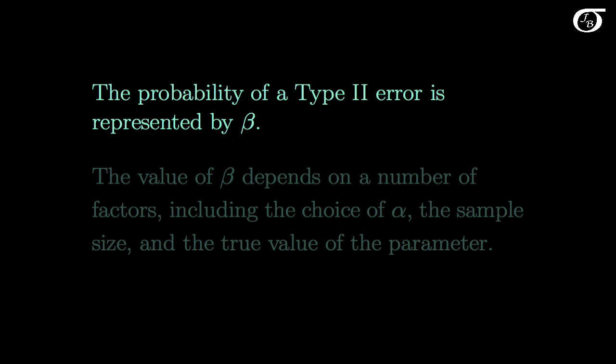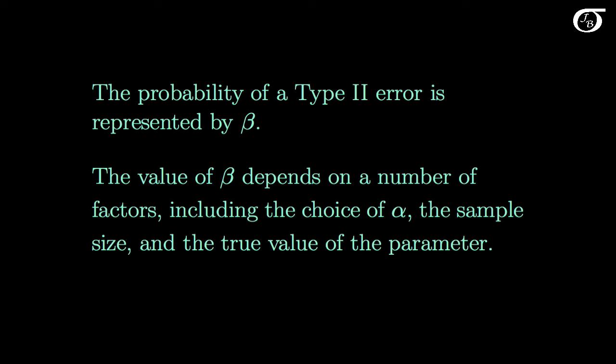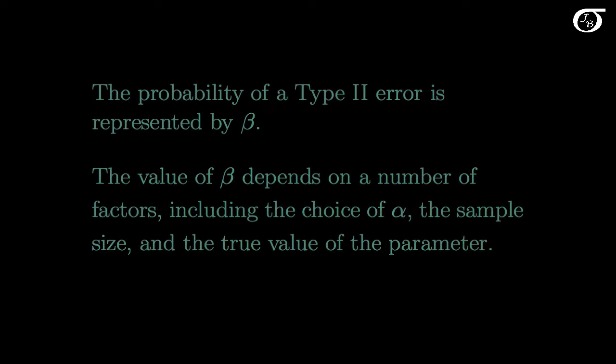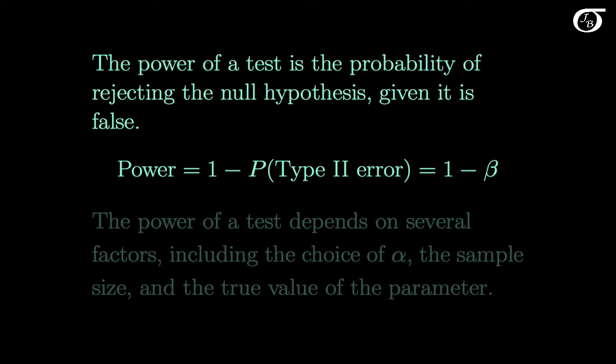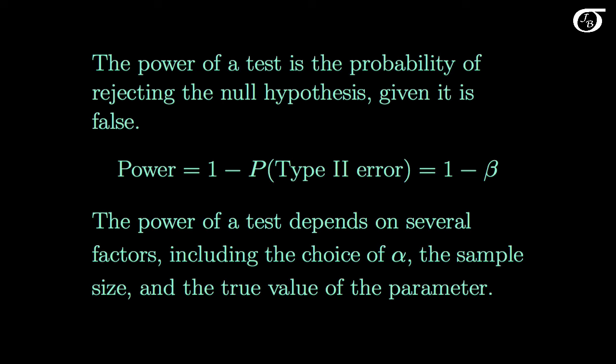The probability of a type 2 error is represented by beta. The value of beta depends on a number of factors, including the choice of alpha, the sample size, and the true value of the parameter. It depends on other factors as well, such as the alternative hypothesis and the variance. The power of a test is the probability of rejecting the null hypothesis, given it is false. Power is 1 minus the probability of a type 2 error, or 1 minus beta. And of course the power depends on the same factors as beta does.